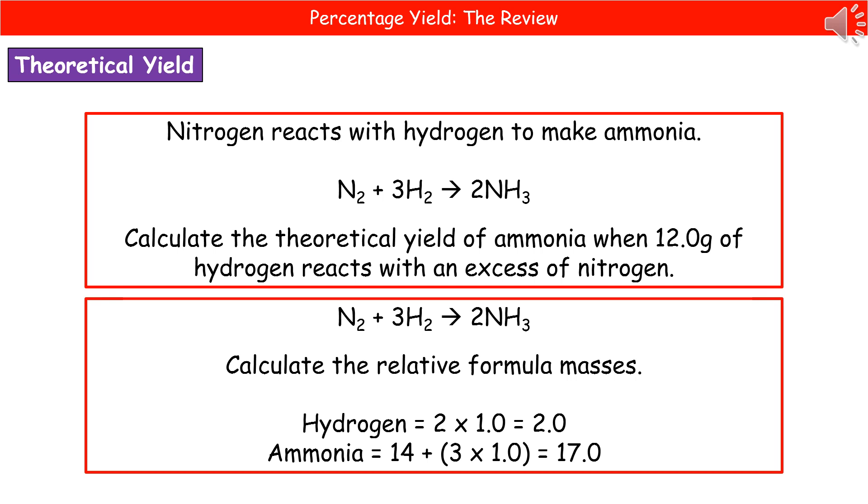We do the same thing for ammonia, which has the formula NH3. So three hydrogens, one nitrogen. Look it up on the periodic table, and what we've got is 14 for nitrogen plus our 3 times 1, which is our hydrogen, gives us our relative formula mass of 17.0 for ammonia.